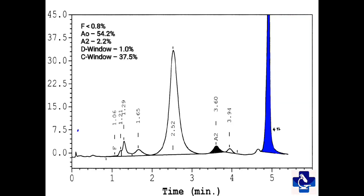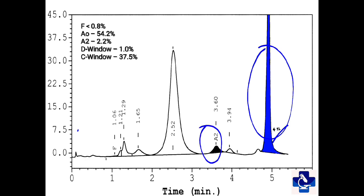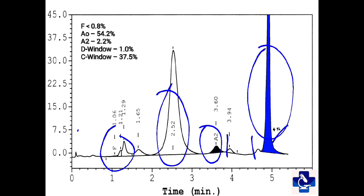In this graph, we have hemoglobin falling in the C window having 37.5% with a retention time of 4.91%. A2 is 2.2%, and between A2 and the C window we have two peaks. Adult hemoglobin is 54.2% with normal range fetal hemoglobin. These distinctive small peaks before the C window and a retention time of 4.91% are distinctive for hemoglobin O Arab.